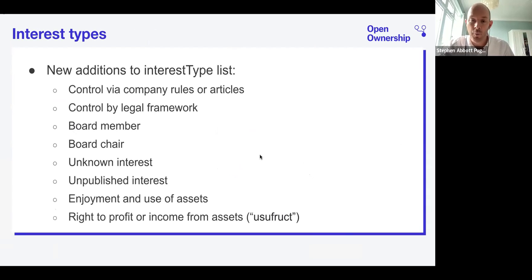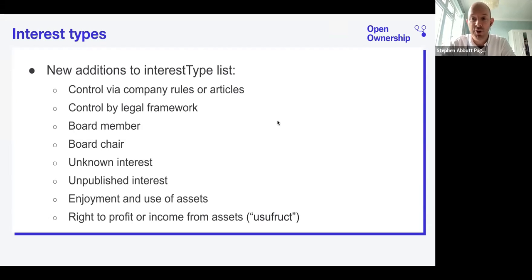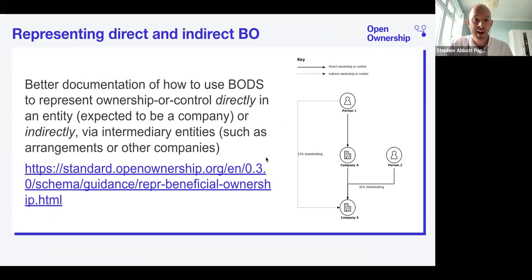Under ownership or control statements, we capture a range of interests that people can hold. The additional interest types we've added recently include board member, board chair, unknown interest, unpublished interest, and usufruct — the right to profit or income from assets. This expands what you can capture in BODS to cover all sorts of ownership or control interests. There's still more to add and more work needed in this area, but these are the ones added in version 0.3.